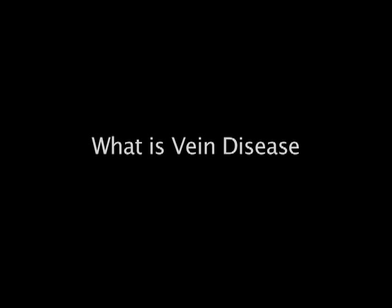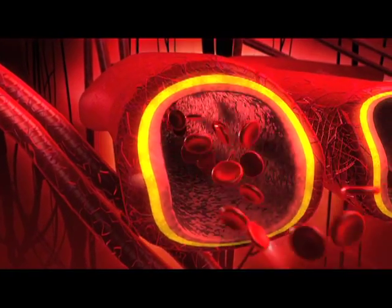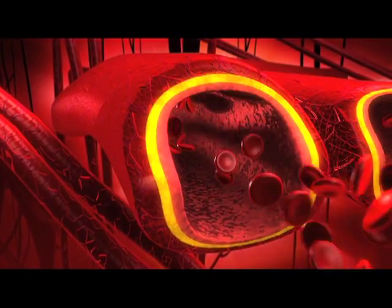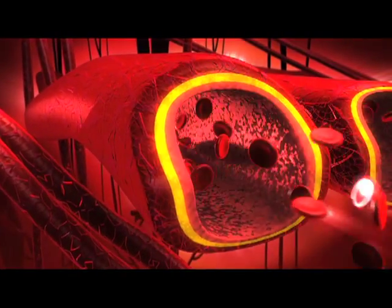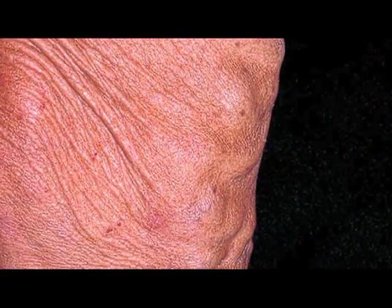Vein disease of the lower extremities is basically chronic venous insufficiency, which means that the veins of the lower extremities — one or the other — are incompetent. They do not hold the blood and make it go in one direction like it should. So the blood stagnates and dilates the veins in the lower extremities, and that causes those symptoms.